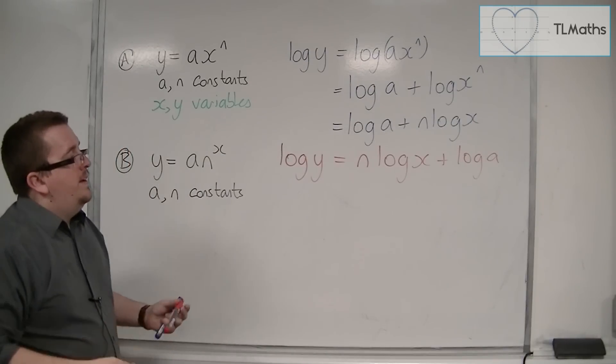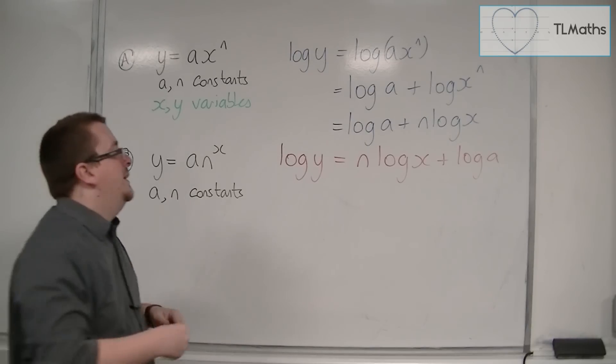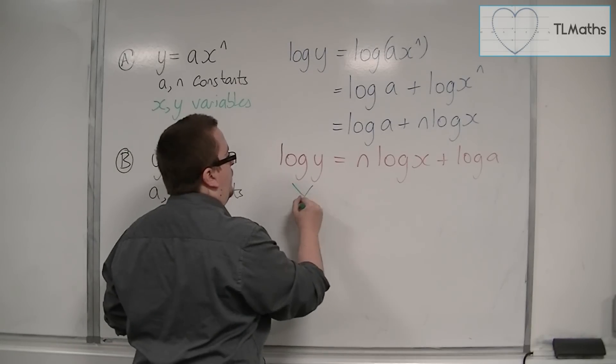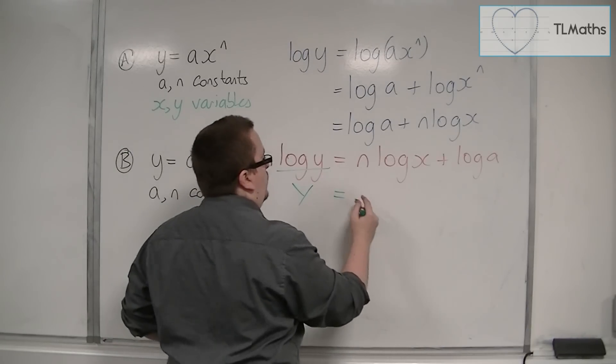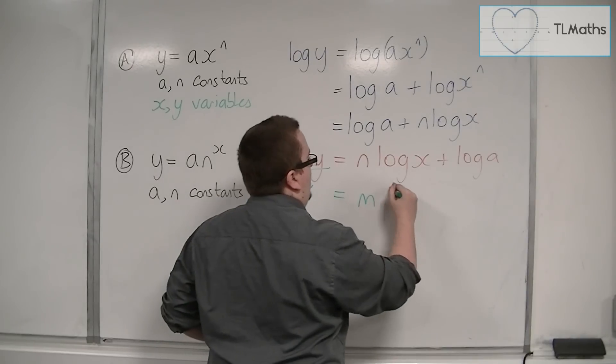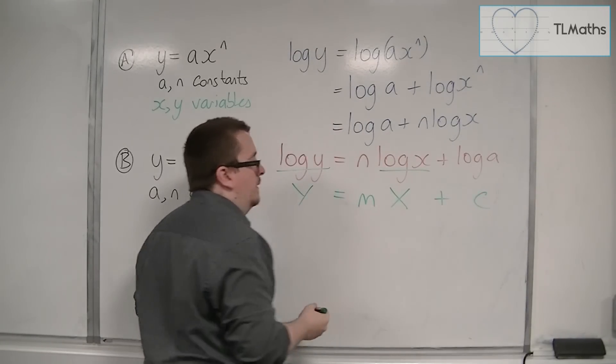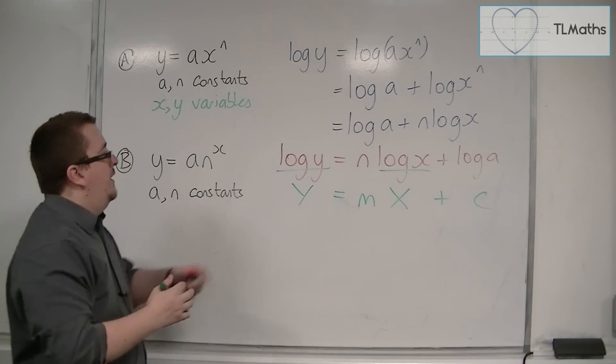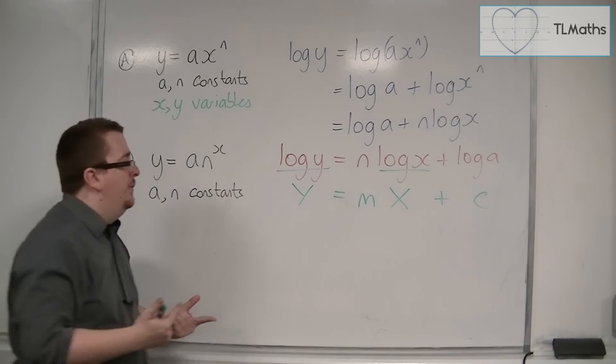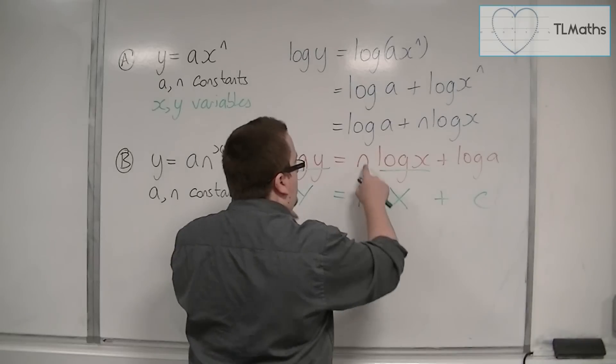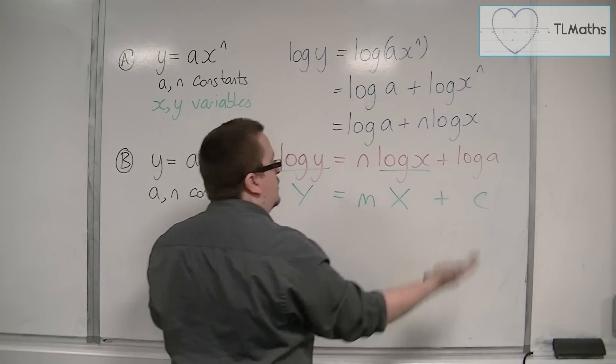If I rewrite that as log y is equal to n log x plus log a, then we can relate that back to a straight line equation as y equals mx plus c. Now, the x and the y are variables, and the n and the log a are constants.